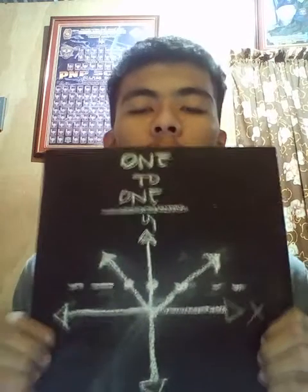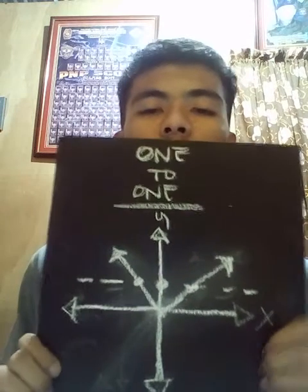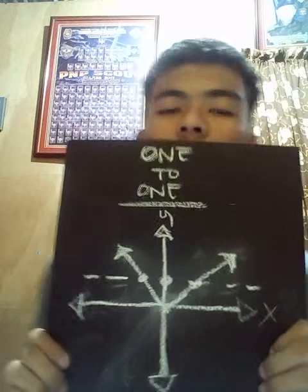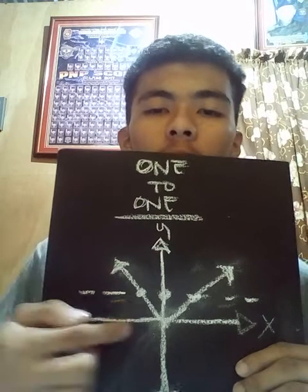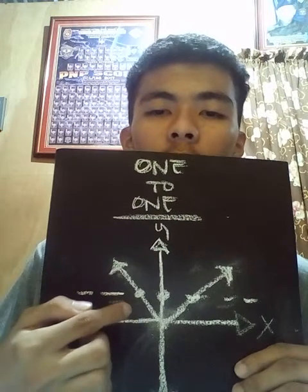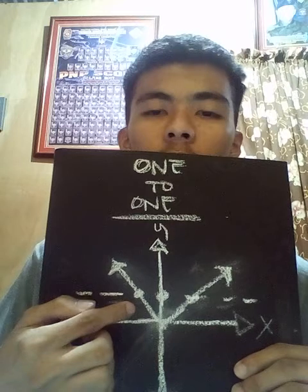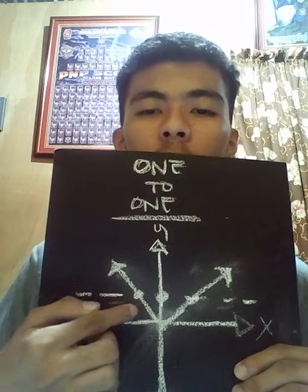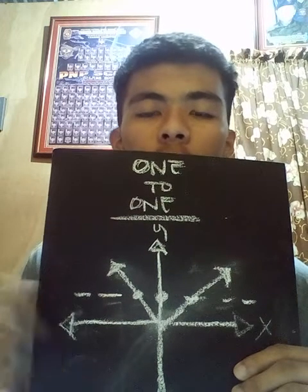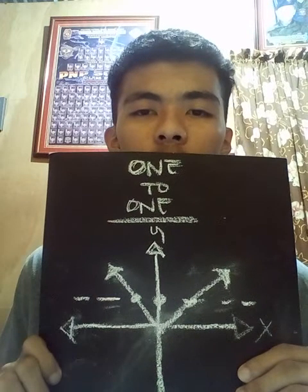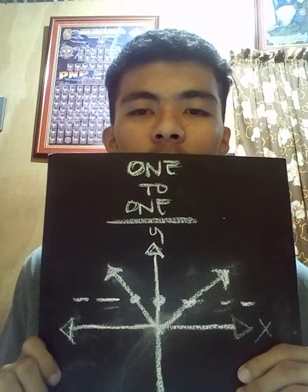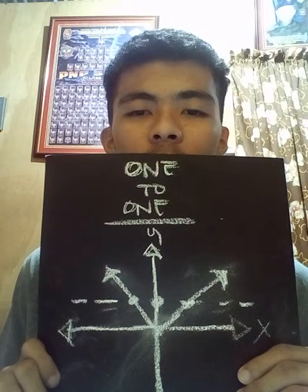This is the second example of a not one-to-one function. As you can see, the horizontal line corresponds to three points.